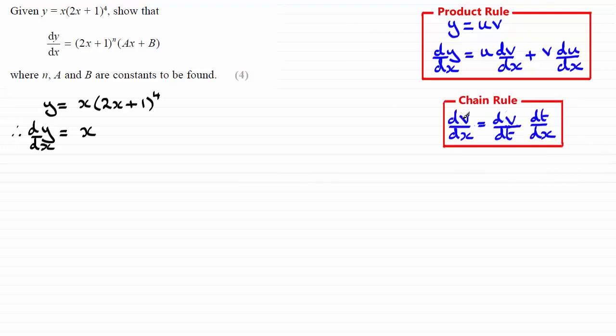And here it is here, that if I've got, say, dv by dx, which I need to find, it's the same as dv by dt times dt by dx. It's as if these two dt's cancel. And again, you'll find a link for tutorials on this, if you're unsure, in the description.